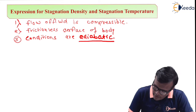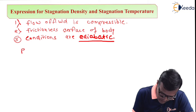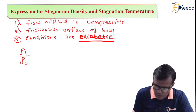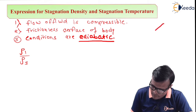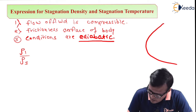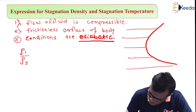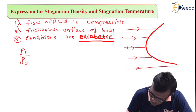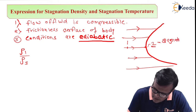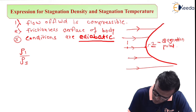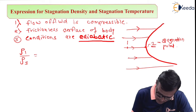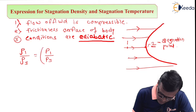So according to adiabatic conditions, we know that rho1 upon rho2 — for simplicity we will consider rho2 as stagnation — because when flow is around this body, these are the directions of flow. This is point 1 and this is the stagnation point which is point 2. So 2 is nothing but the stagnation point.